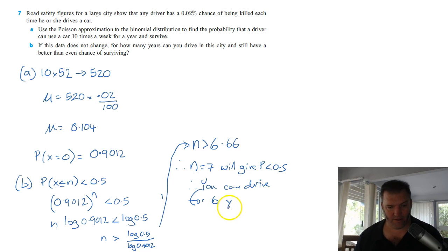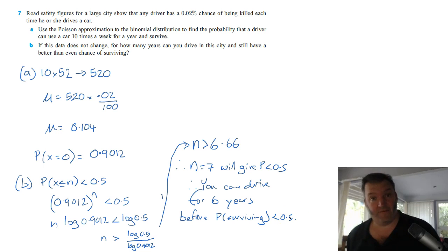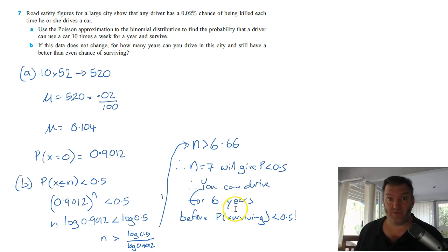That was pretty fancy writing, wasn't it? Before probability of surviving is less than 0.5. So you can see why at the start, I said let's hope these figures aren't for real. Alright, that's question 7. Catch you the next one, guys!